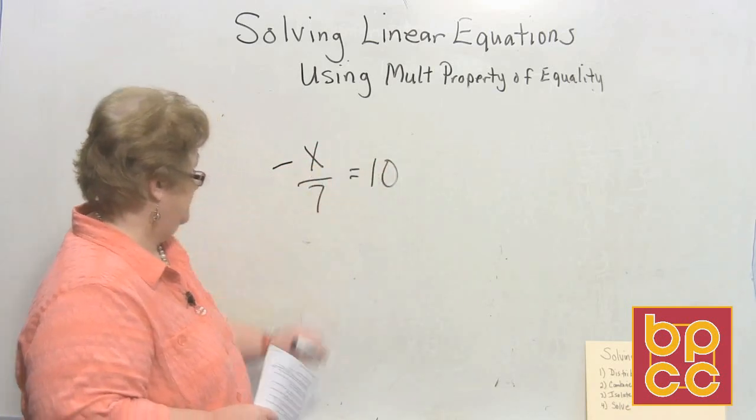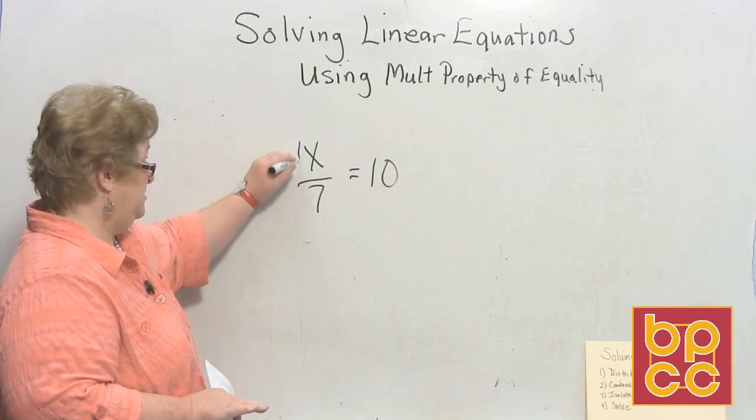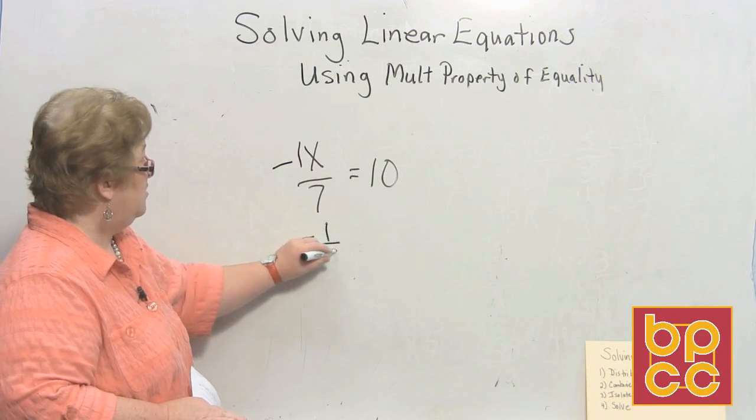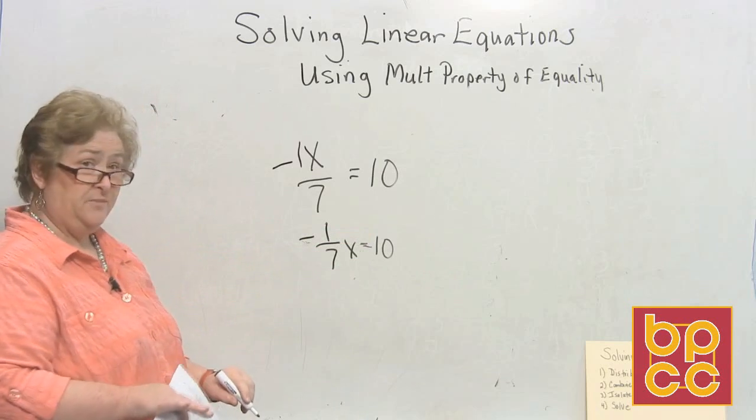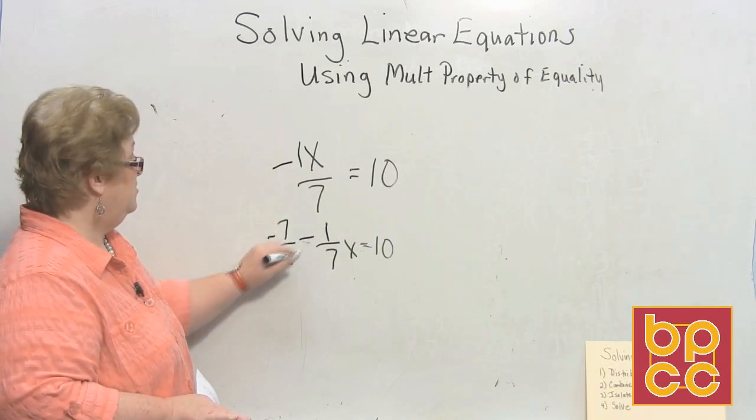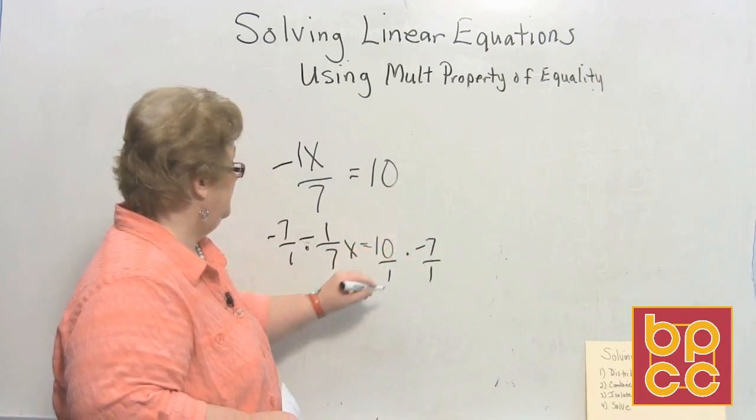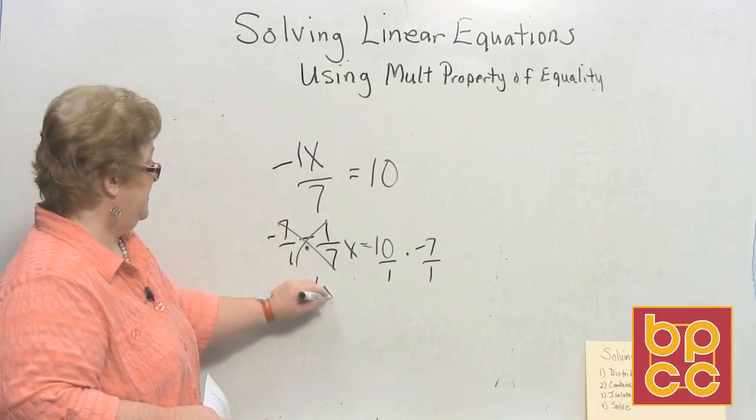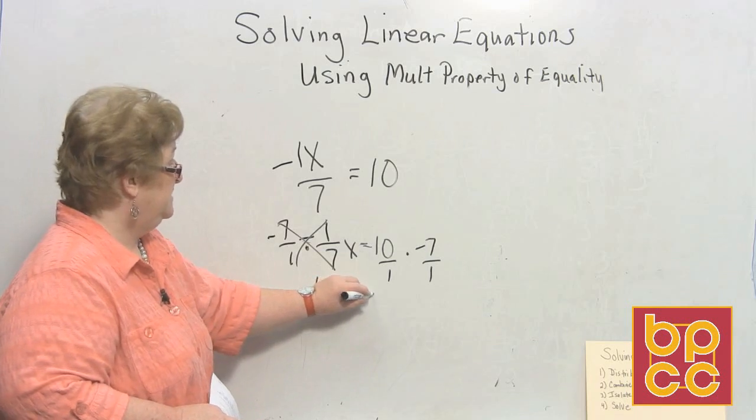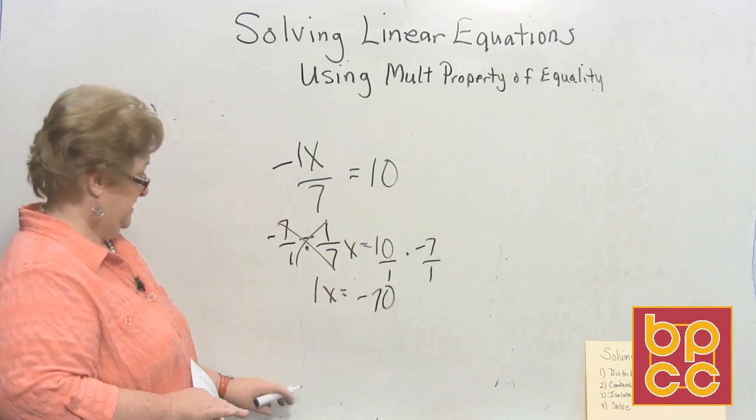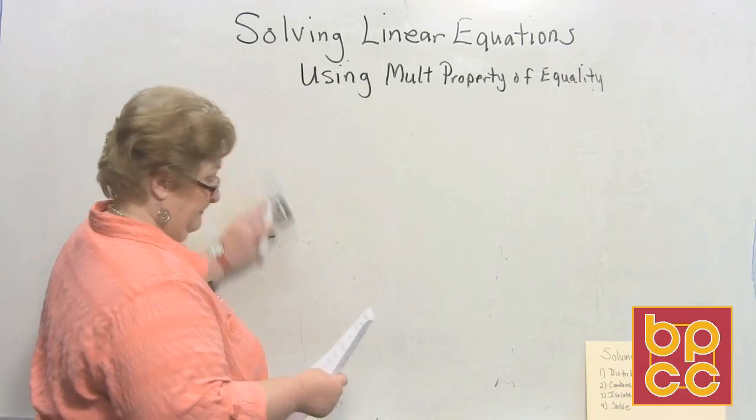Now this time, I'm going to do a negative x over 7 is equal to 10. I remember I like to see my fractions, so I'm going to rewrite it. So I'm going to go a negative 1/7 x equal to 10. Now reciprocal is a negative 7 over 1, and I'm going to multiply over here a negative 7 over 1. This clears out to 1x, and 10 times a negative 7 in multiplication is a negative 70.